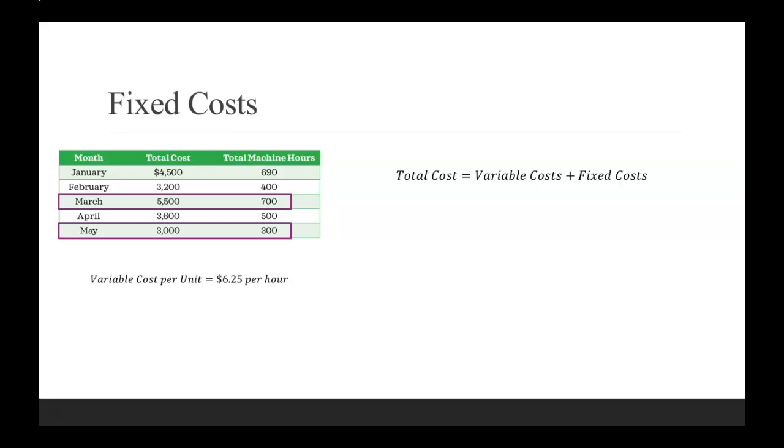So let's use March as our example here. Total cost $5,500 equals your variable cost, which would be the 700 machine hours times the $6.25, plus our fixed costs.